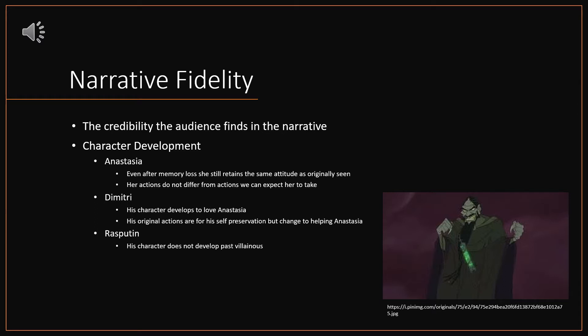Narrative fidelity is the credibility that the audience finds within the narrative. This could be the reasoning that characters have and if their actions are following what we expect the characters to do as we see them. One of the biggest ways that we can see narrative fidelity through Anastasia is with character development. At the very beginning of the movie, we see a portrayal of Anastasia's attitude and personality. After she loses her memory, this personality doesn't change — she still has the same personality that we expect her to have.